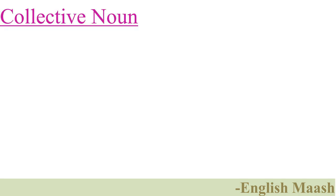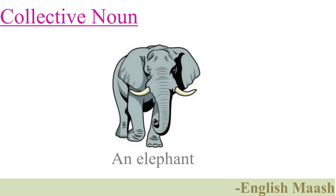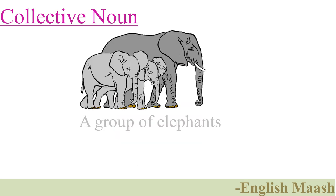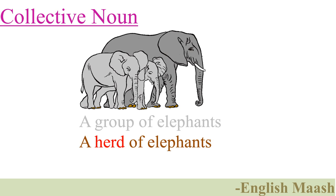Let us learn what a collective noun is. This is an elephant. This is a group of elephants. In the English language, a group of elephants is better called a herd of elephants.